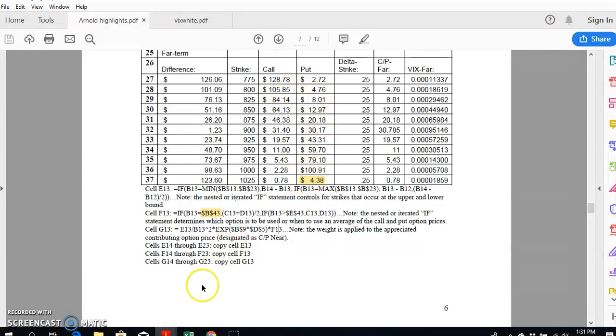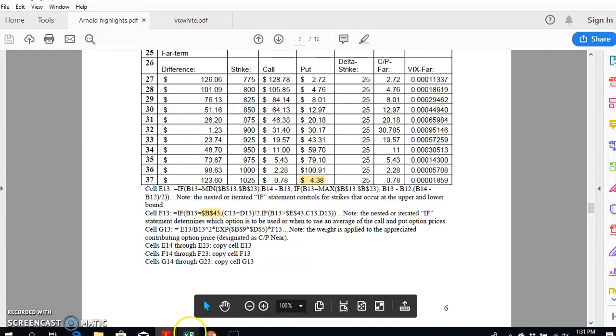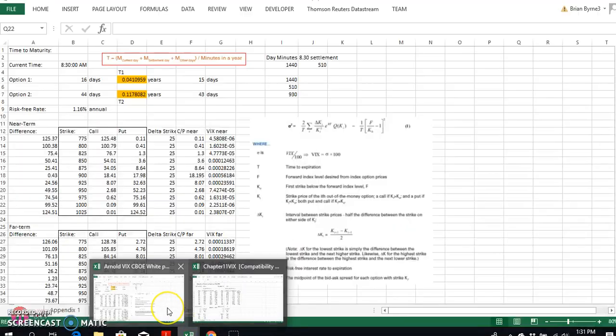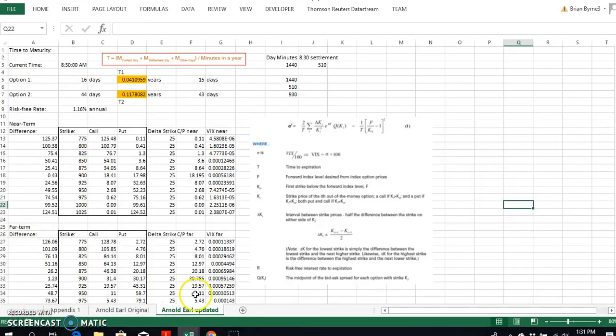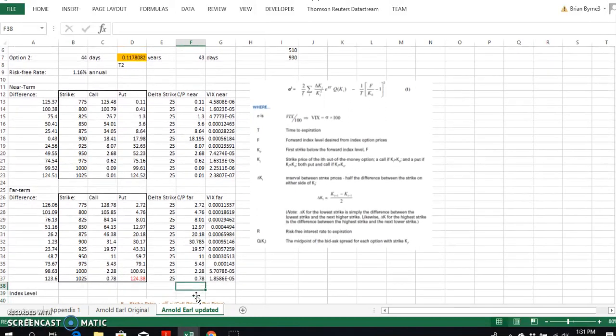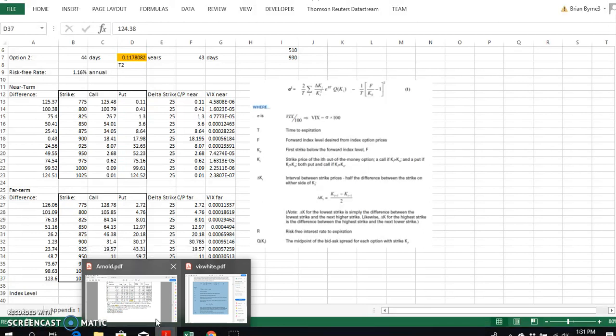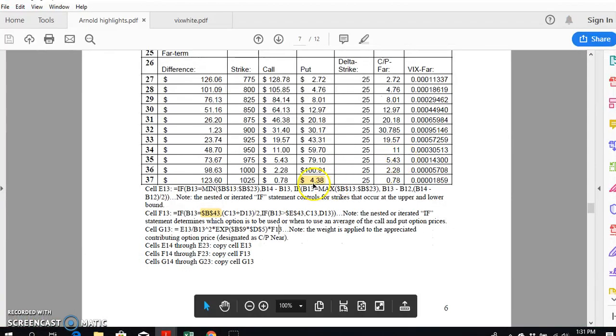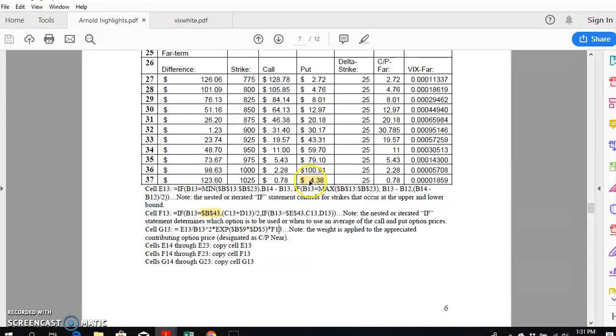My figures in the spreadsheet with the updated Arnold spreadsheet - if we look here, the figure I have here for the put option is 124.38, and in Arnold he has 4.38, so he's just missed something, just a misprint.